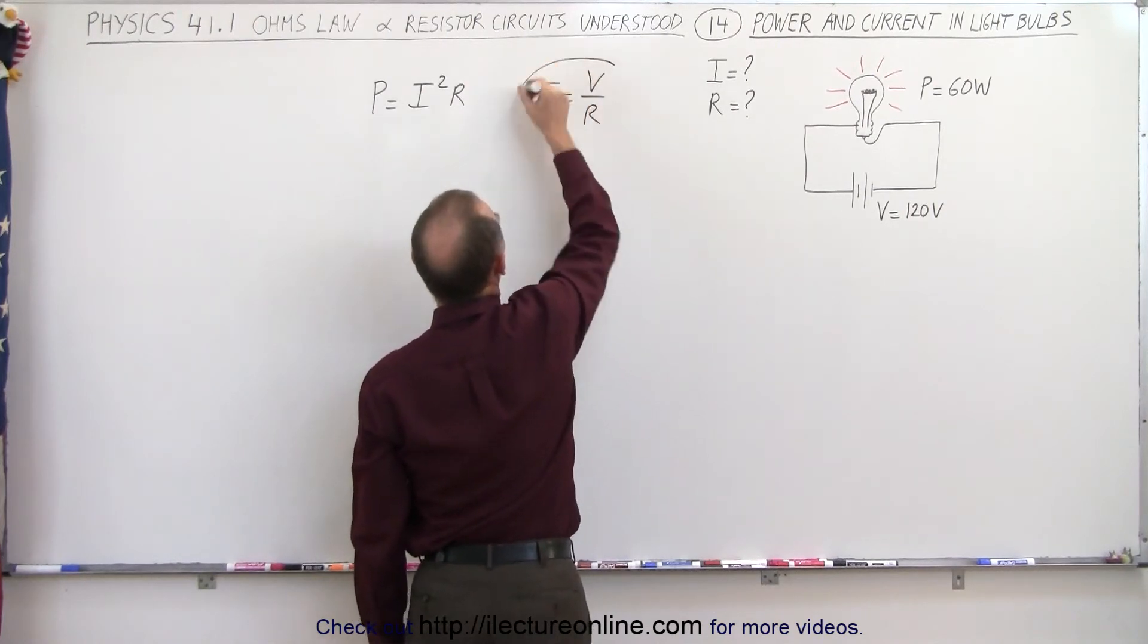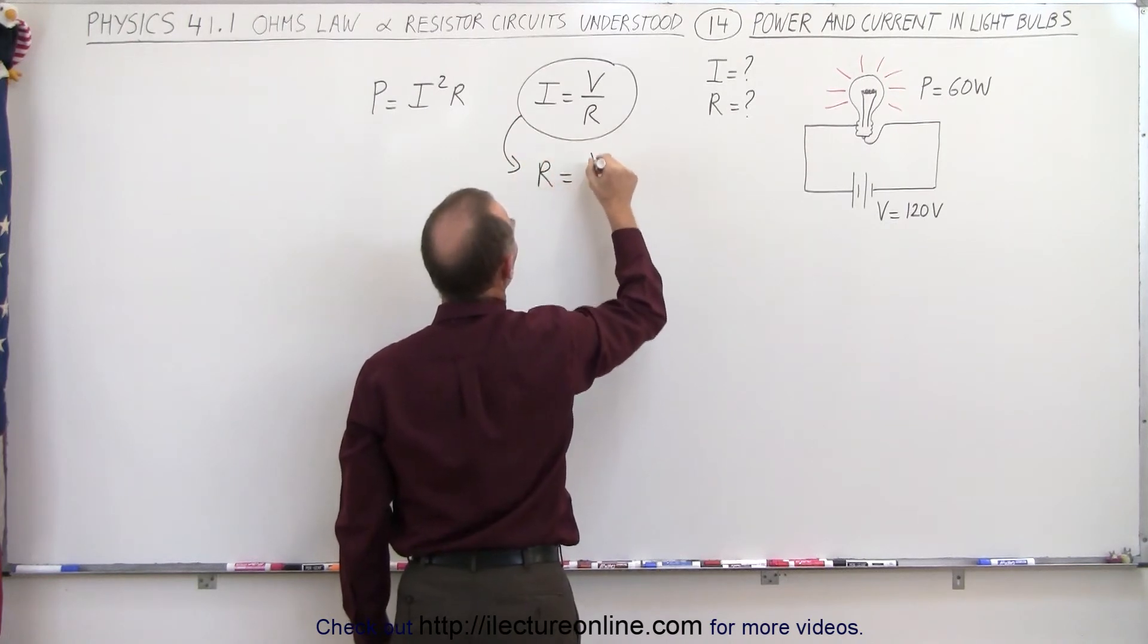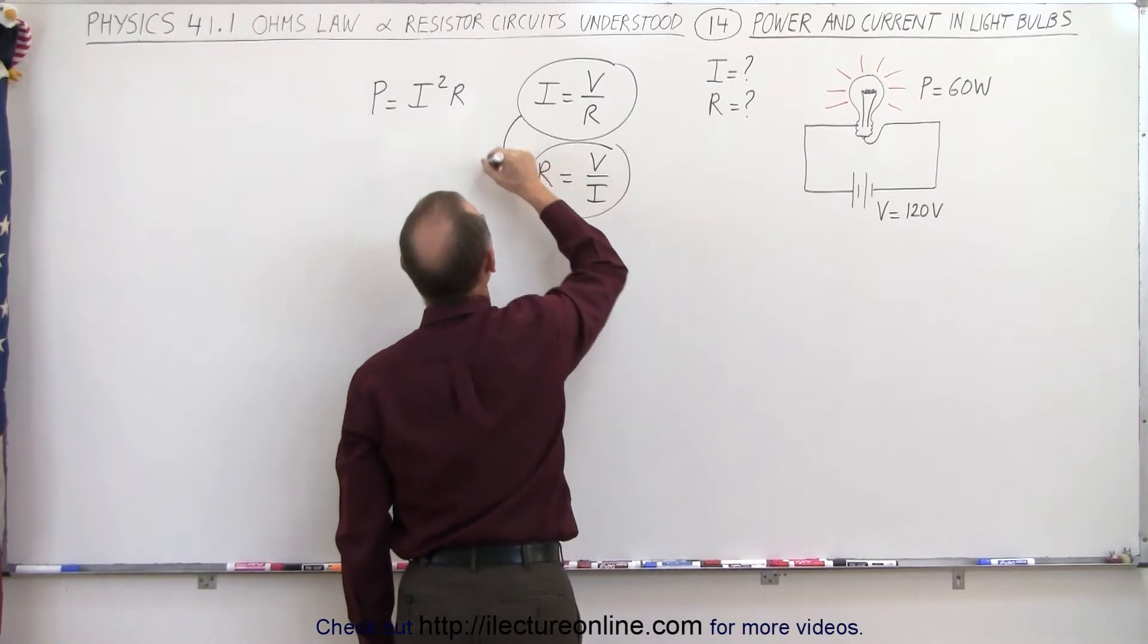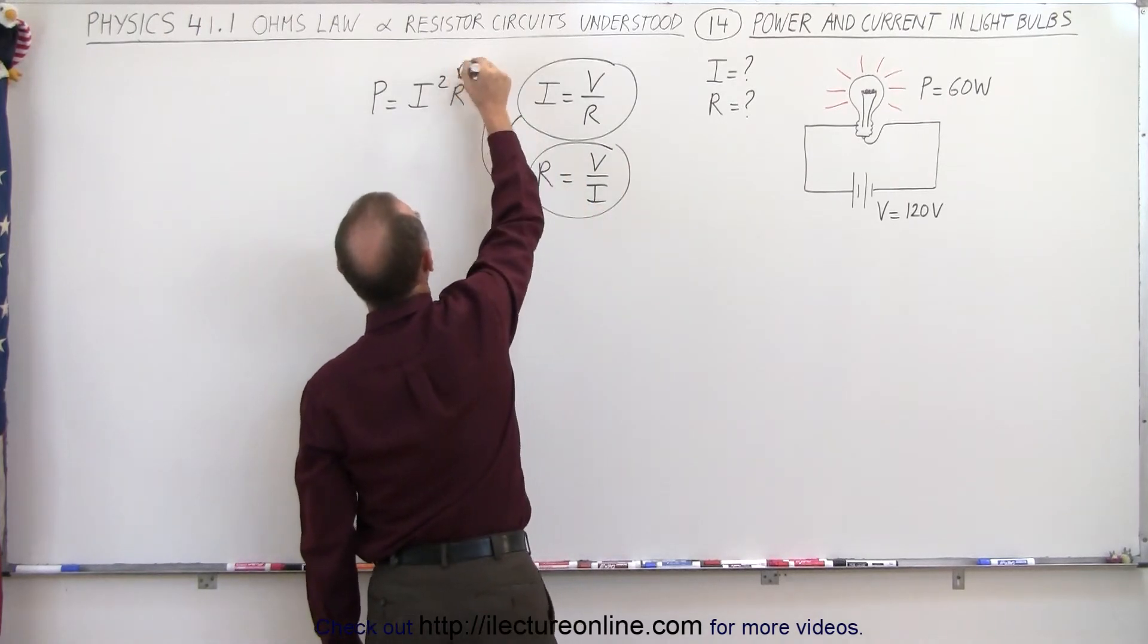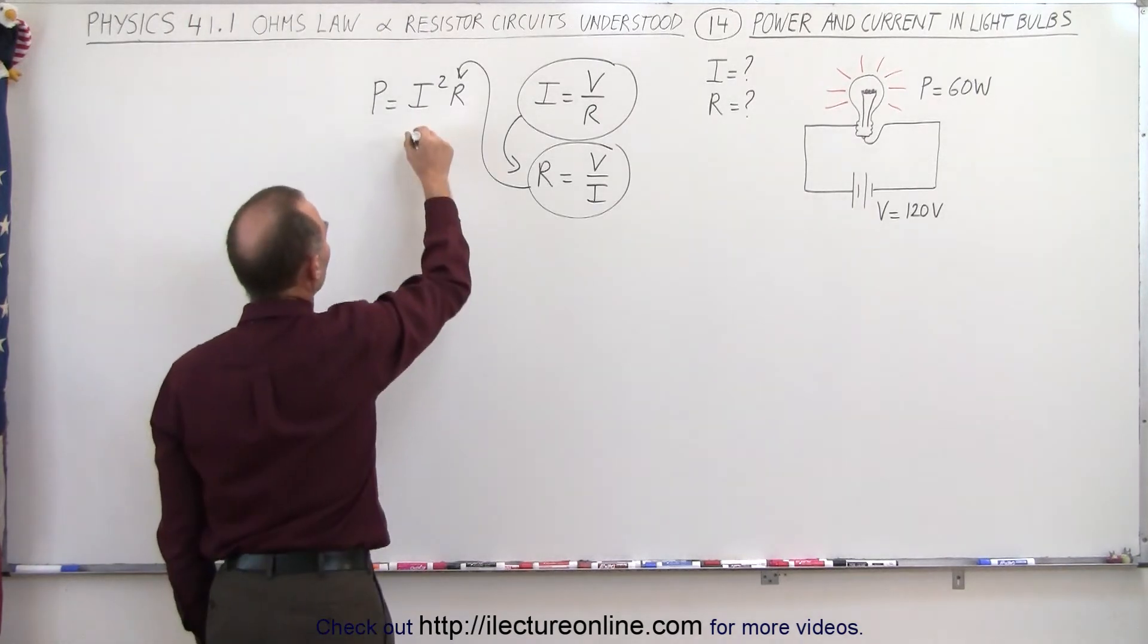And then we take Ohm's law and we rewrite that equation as R is equal to V divided by I, and then take that form of the Ohm's law equation and substitute that in for the resistance in the power equation. We get the following equation.